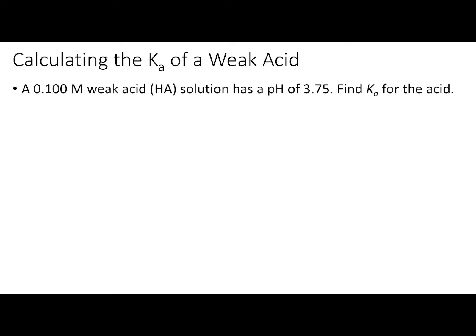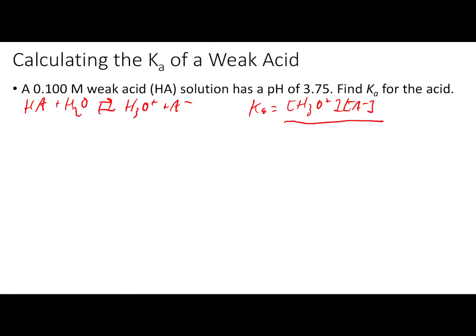Let's start by calculating the Ka of a weak acid. We have a 0.100 M weak acid solution that has a pH of 3.75, and we want to find the Ka. Our weak acid is generically abbreviated HA. So the reaction is: HA + H2O yields H3O+ and A−. The Ka expression for this reaction is the concentration of H3O+ times the concentration of A−, all divided by the concentration of HA.